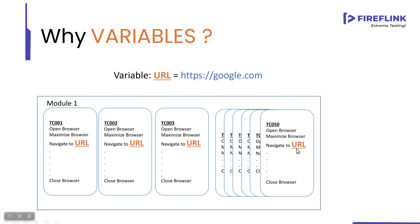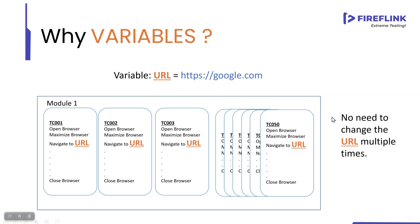In all those 50 scripts, I didn't hard code the data — I used a variable called URL. Now, if the URL is changing from google.com to test.google.com, I no longer need to change the URL multiple times. I just have to go to this particular variable and change it only once. Once I change the URL there, it is going to reflect in all the scripts.